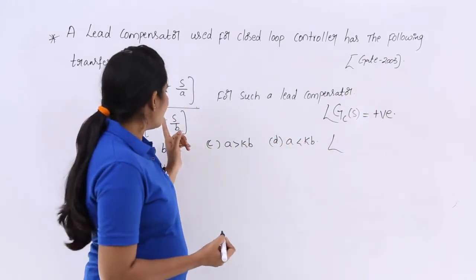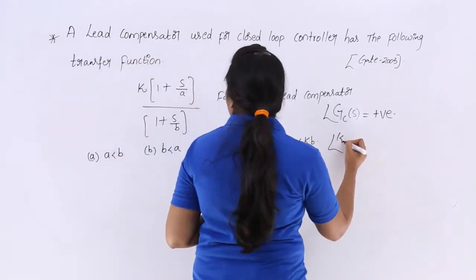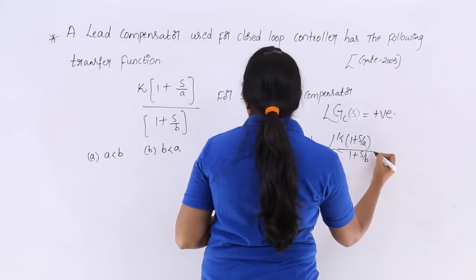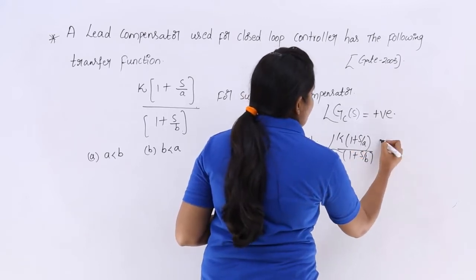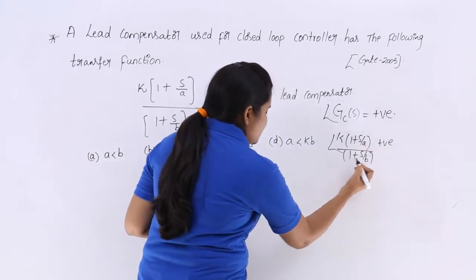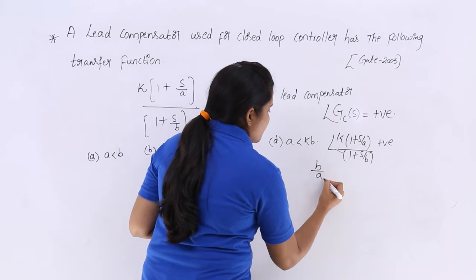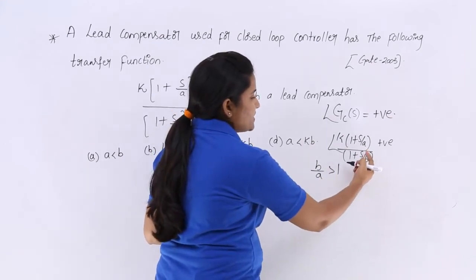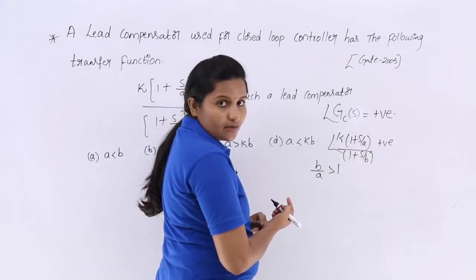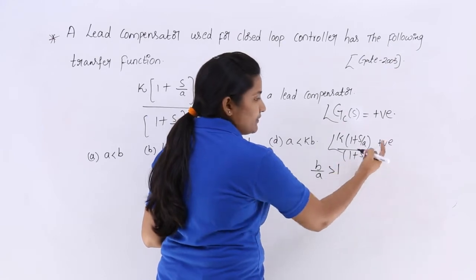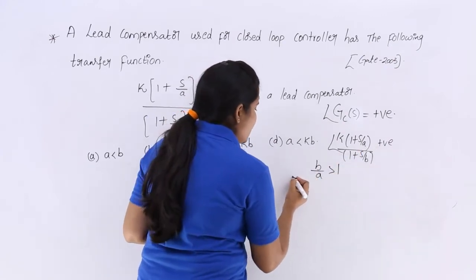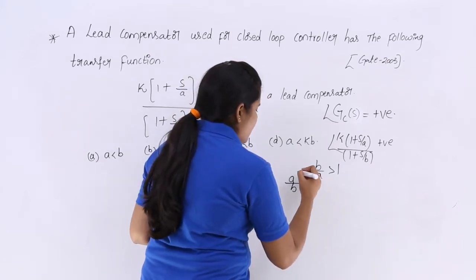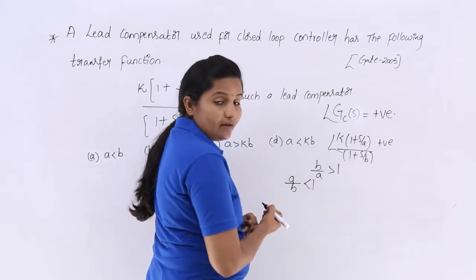The angle of K into (1 + S/A) divided by (1 + S/B) must be positive. For the angle to be positive, the pole-to-zero ratio must be greater than 1. So, zero coefficient B by A must be greater than 1, which implies A by B must be less than 1.